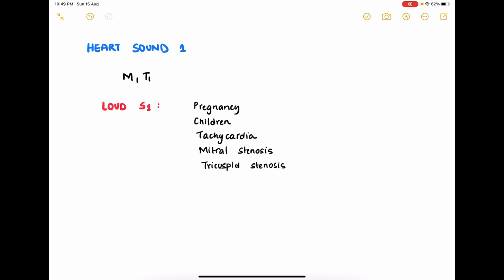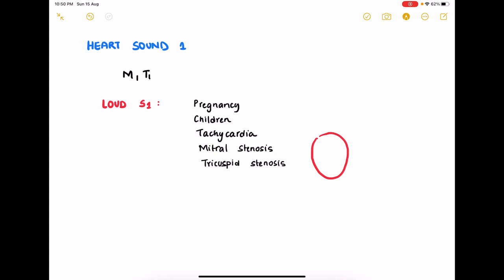The conditions in which loud S1 is heard are physiologically in pregnancy and children because of hyperdynamic circulation. In case of tachycardia also there is a louder S1. In case of mitral stenosis and tricuspid stenosis there is a loud S1. The logic for this is in mitral stenosis, the pressure in the left atria will be higher, way higher than normal, so the mitral valve will open with great force and it snaps back or closes also with great force and thus the S1 is louder than normal.